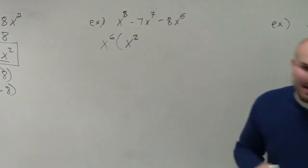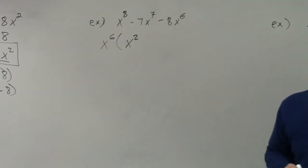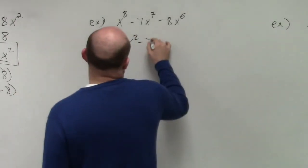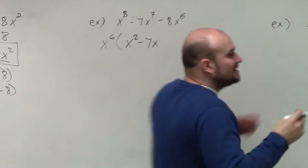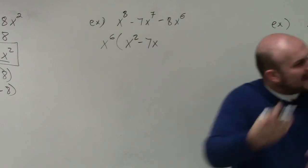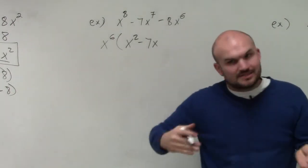x to the 6th times what gives me negative 7x to the 7th? Negative 7x. Negative 7x, right? Because remember, x to the 6th times x is 6 plus 1 is x to the 7th.